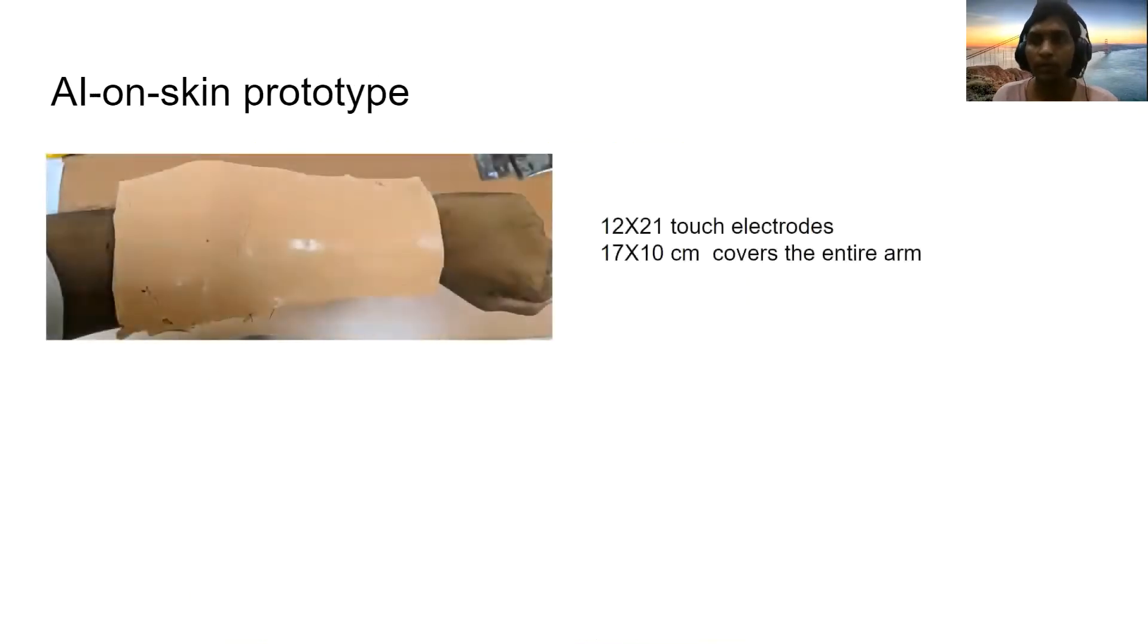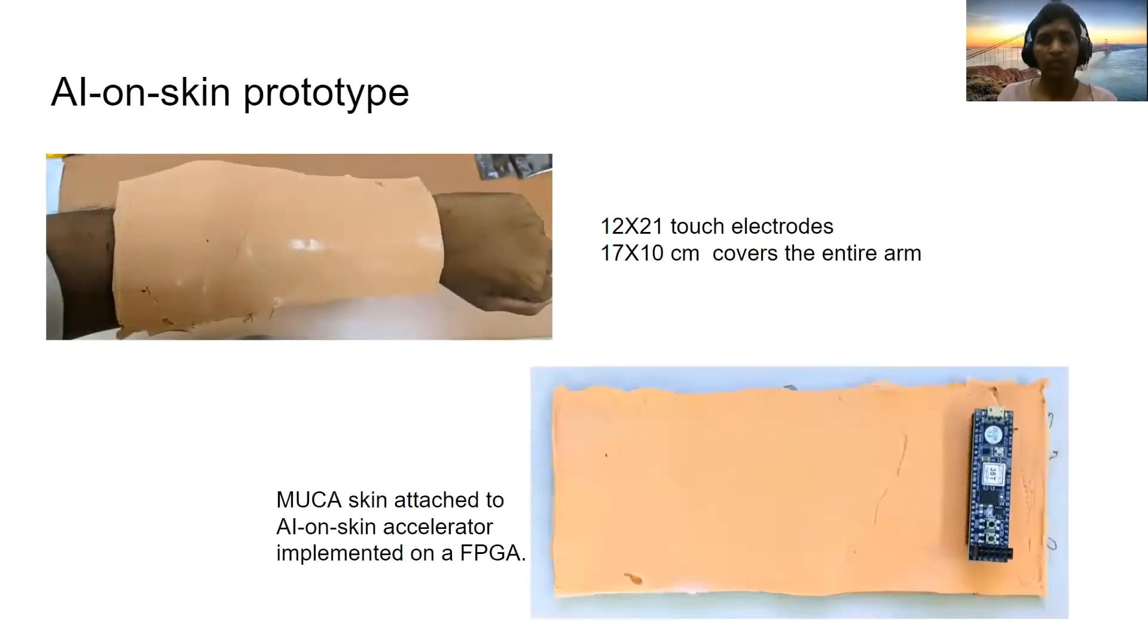We built an AI on skin prototype that covers the entire hand using MUCA artificial skin interface. This is our exact prototype in which the MUCA artificial skin interface is connected to an AI on skin accelerator implemented on FPGA. In future, we are planning to fabricate our AI on skin accelerator as a tiny ASIC chip of the size of 3 mm x 3 mm.